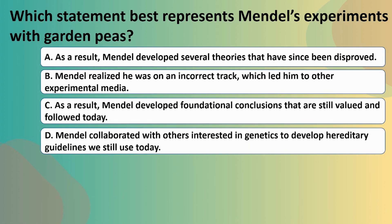Next question: which statement best represents Mendel's experiments with garden peas? A: Mendel developed several theories that have since been disproved. B: Mendel realized he was on an incorrect track, which led him to other experimental media. C: Mendel developed foundational conclusions that are still valid and followed today. D: Mendel collaborated with others interested in genetics to develop hereditary guidelines we still use today. Looking at our options and remembering our material — Mendel is the father of genetics and had a theory of heredity — the answer is D.